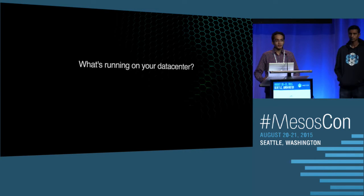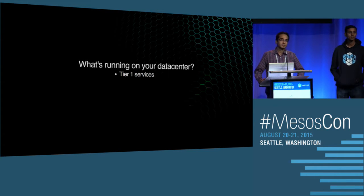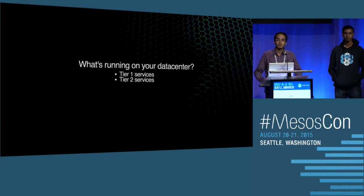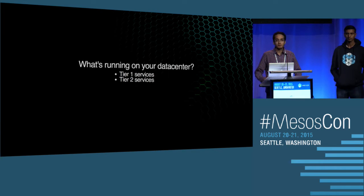What's running on your data center? Well, you have some tier one services — business critical services like your checkout service, your login service, or the service which takes cab reservations. These services are very critical because when they go down, they really affect your business directly. And then you have some tier two services — good examples being your build system or your QA environment. They are not as critical as tier one, but they're really helpful for your development environment.